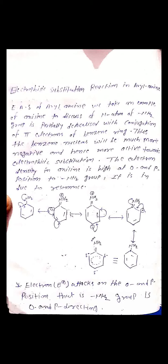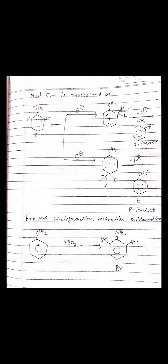The electron density in Aniline is high at the Ortho and Para positions to the NH2 group, due to resonance. In the resonating structures, the lone pair of the NH2 group's Nitrogen donates into the Benzene ring and the Benzene pi-electrons are delocalized. So, negative charge is present at the Ortho and Para positions, and the Electrophile attacks at those positions. This means NH2 is an Ortho and Para directing group, as represented in the mechanism of Electrophilic Substitution Reactions of Aryl Amines.